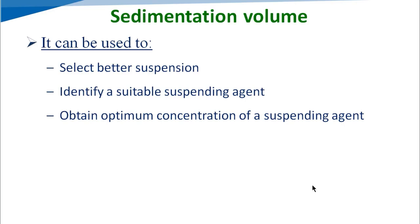Sedimentation volume can be used to select the better suspension by comparing two or three different suspensions, and also to identify a suitable suspending agent. For example, if we take three different suspending agents — SLS, Tween, and Span — and prepare a suspension with each, we can compare which one formulates the best suspension and determine the optimum concentration of the suspending agent required.